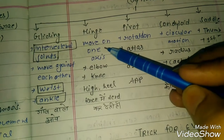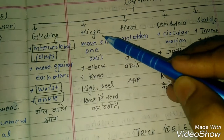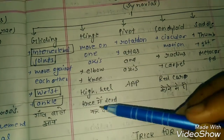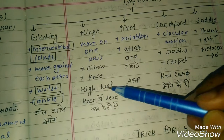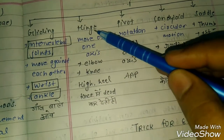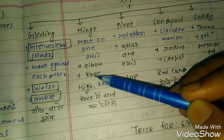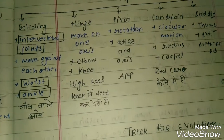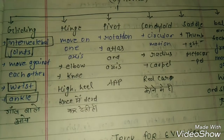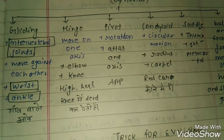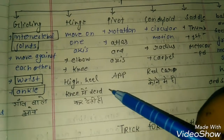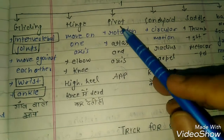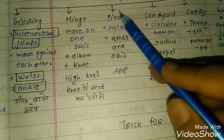Hinge joints move on one axis. For pivot joints, the example is atlas and axis — you will remember everything for pivot.